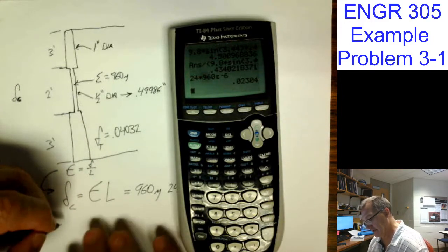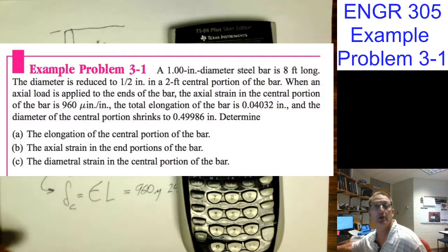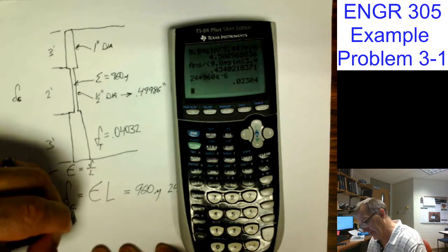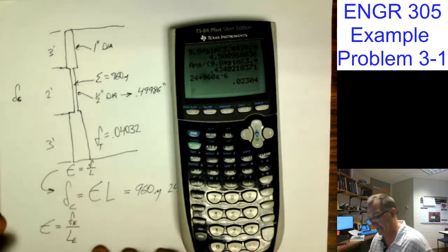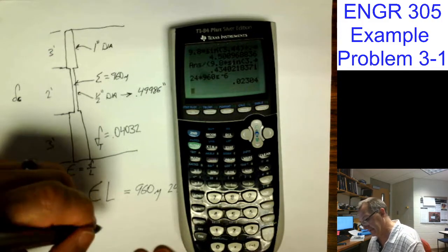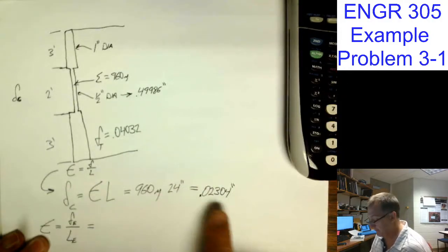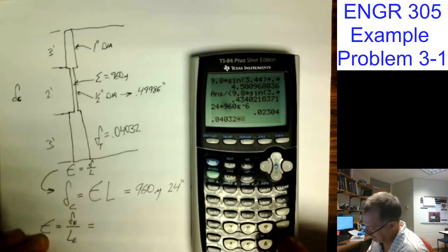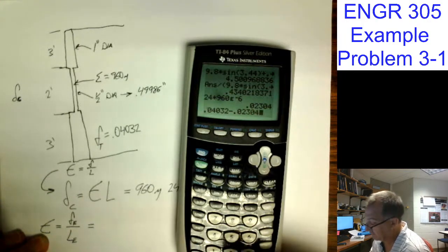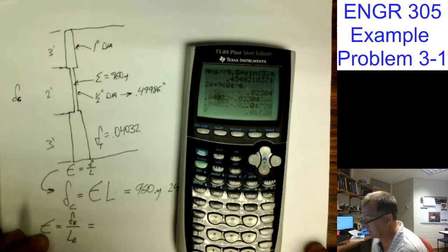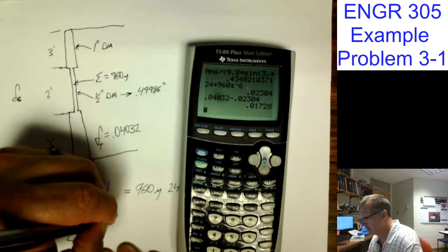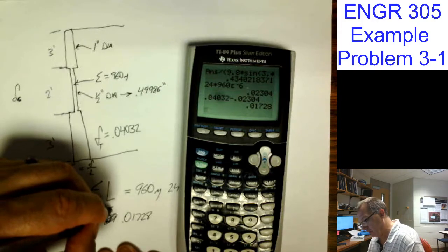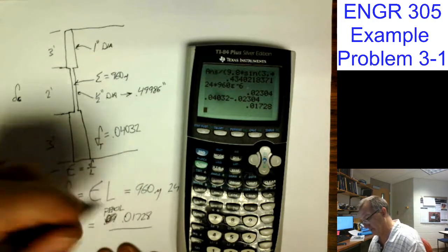Now, the total. So now the other question was, what's the axial strain in the end portions? Well, that strain is equal to the change in the ends divided by the length of the ends, because it's not the whole system. So delta for the ends is going to be equal to the total minus how much the middle shrunk. So it's 0.04032 minus 0.02304 equals 0.01728.